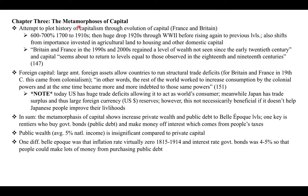In chapter three, the metamorphosis of capital, he plots the history of capitalism through the evolution of capital, especially looking at France and Britain. The capital-income ratio was 600 to 700 percent between the 1870s and 1910s — a small portion of people at the top had all the wealth while average working people had very minimal amounts. Then there's a huge drop through World War II before rising again to previous levels. He also observes shifts from agricultural land to housing and other domestic capital, especially financial assets.